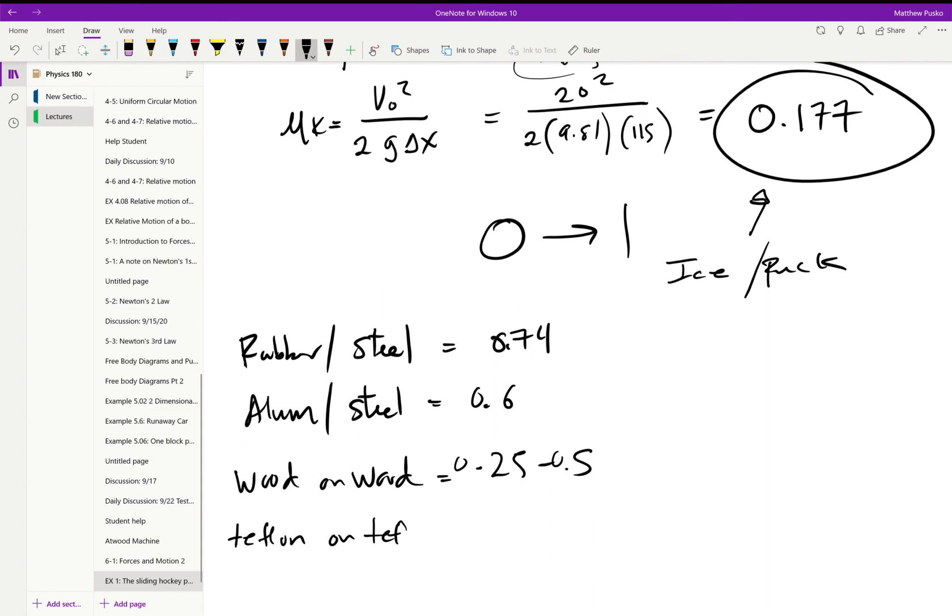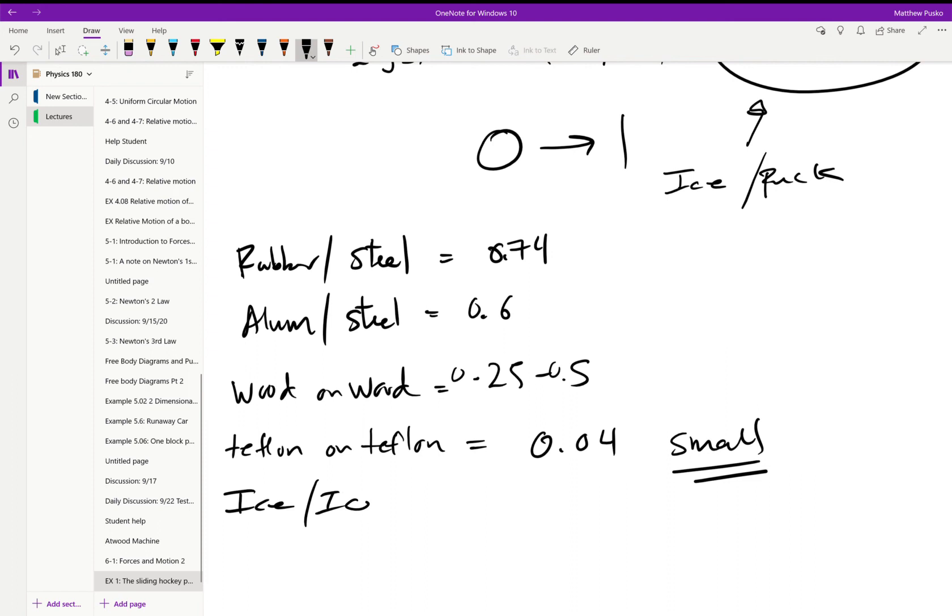But we get things like teflon. Teflon on teflon, teflon's made by Dupont or was patented and created by Dupont. If we have those two, some of the most frictionless surfaces in the world on each other, we get a 0.004. This is very small. Teflon is damn near frictionless. Where ice on ice ends up being around 0.1, so the ice on rubber ended up being a little bit bigger than ice on ice.